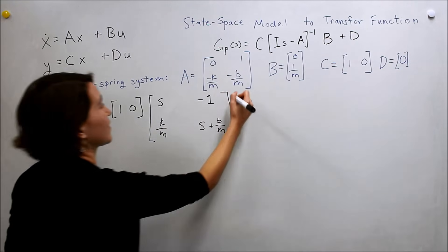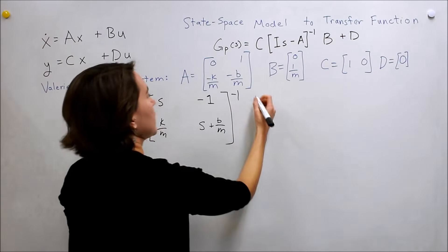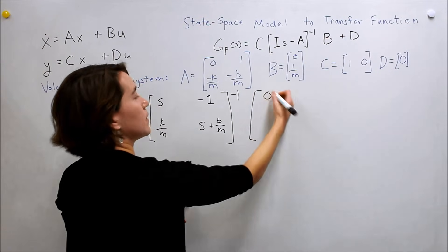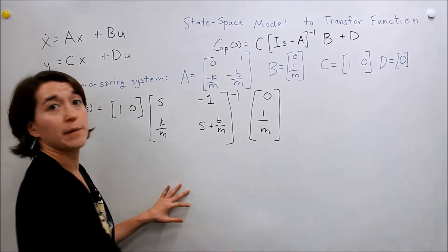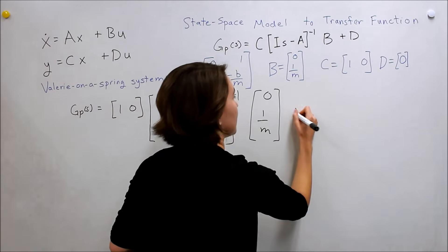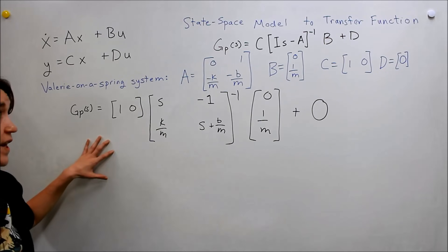Okay. And then we still have to take the inverse of this, but we will just write it like that for now. And then b will be zero, one over m here. And then plus d, our d is zero. So that is our expression written out.